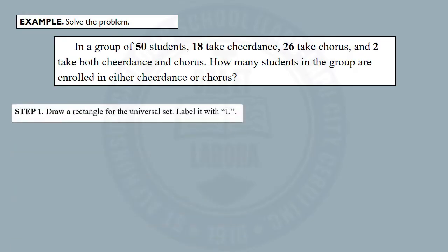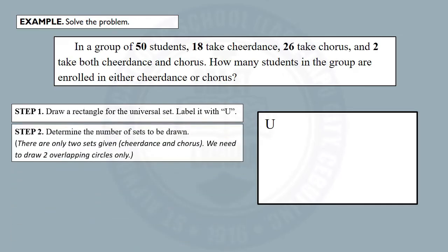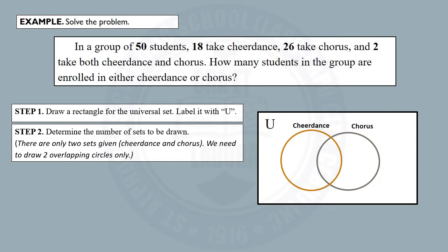Step 1: Draw a rectangle for the universal set and label it with capital letter U. Step 2: Determine the number of sets to be drawn. In this problem, there are only two sets given — cheer dance and chorus — so we need to draw two overlapping circles only. Do not forget their labels.